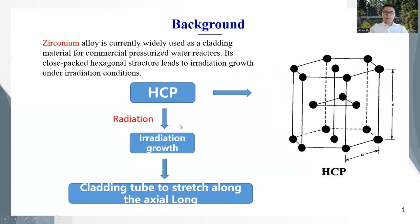The first part is the background of my research. Zirconium alloy has already been widely used as cladding material for commercial pressurized water reactors. Its close-packed hexagonal structure leads to irradiation growth under irradiation conditions, and the irradiation growth may cause the cladding tube to stretch along the axial length and make the tube touch with the top seat, which may threaten the normal operation of the reactor.